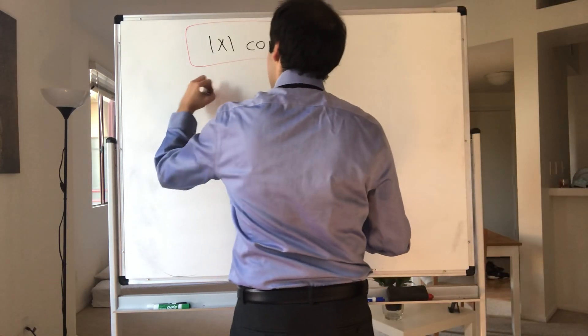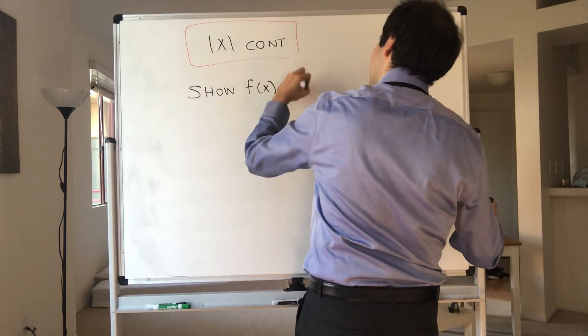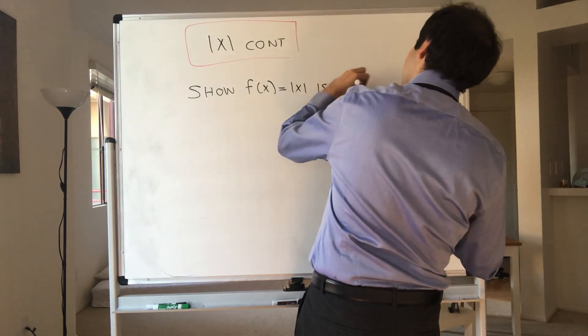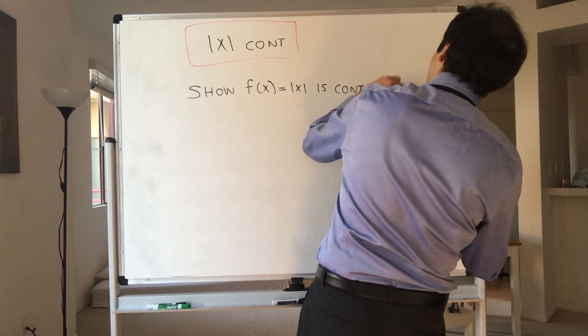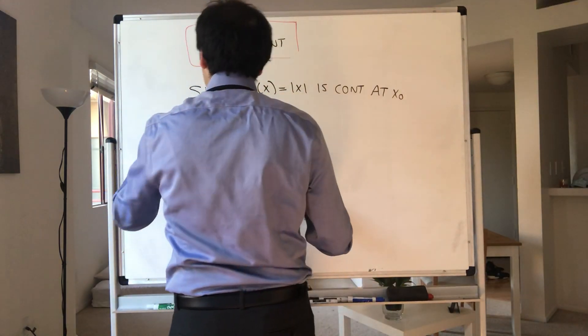So let's show that f(x) equals absolute value of x is continuous, let's say, at any point x naught. And more precisely, this means we have to show that for any epsilon,